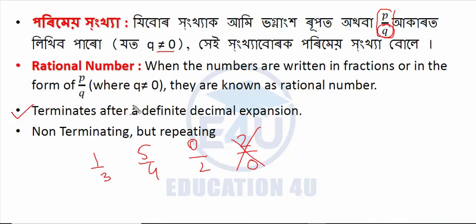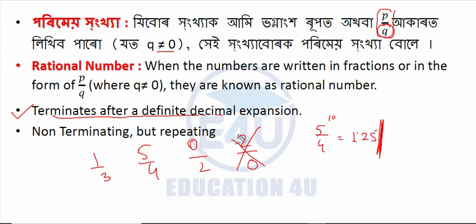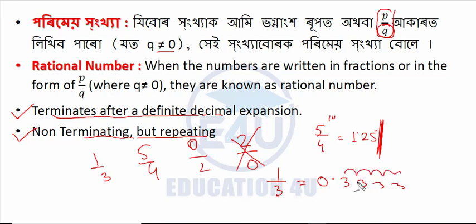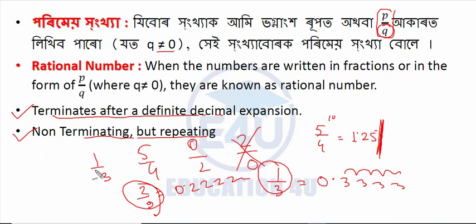A rational number terminates after a definite decimal. For example, 5 by 4 is equal to 1.25, and 1 by 4 is equal to 0.25. Also, 2 by 9 equals 0.22222..., which is a repeating decimal and is also a rational number.